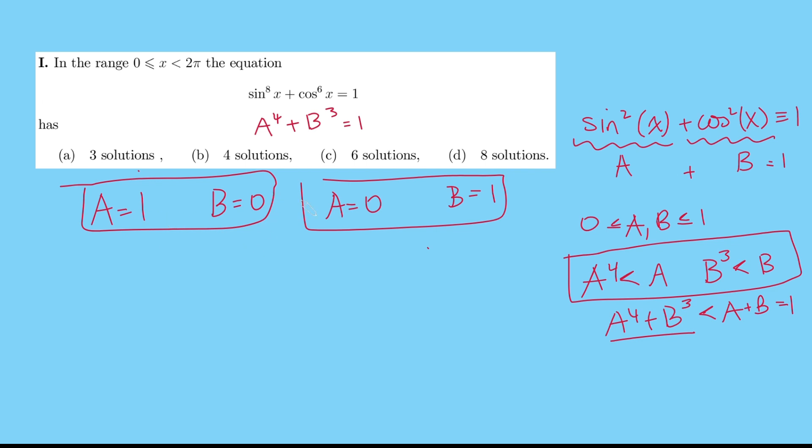So if A equals 1, that means that sin squared x is 1, and that means that sin of x is plus or minus 1. And now how many times does this happen in this range? This happens twice. This is going to be when x is pi over 2, and x is 3 pi over 2.